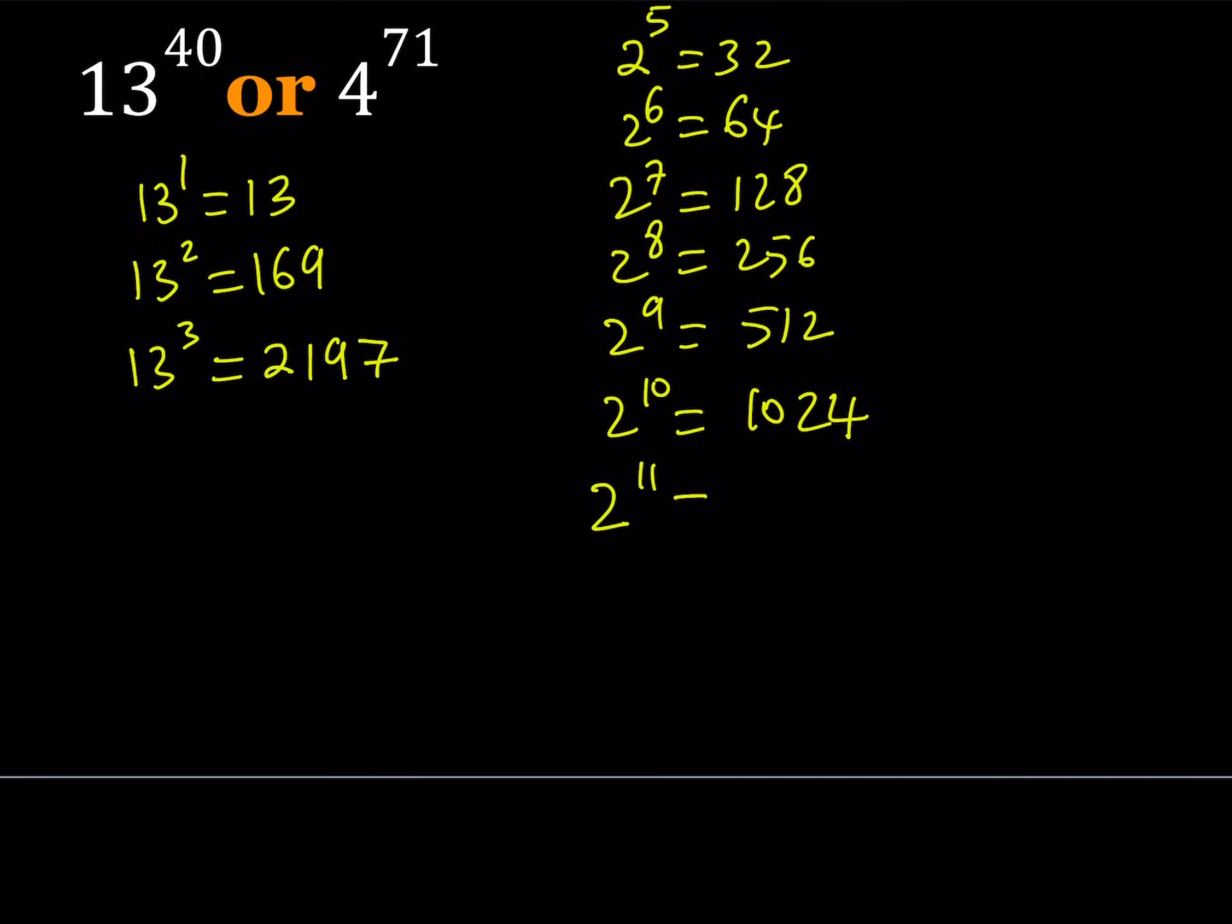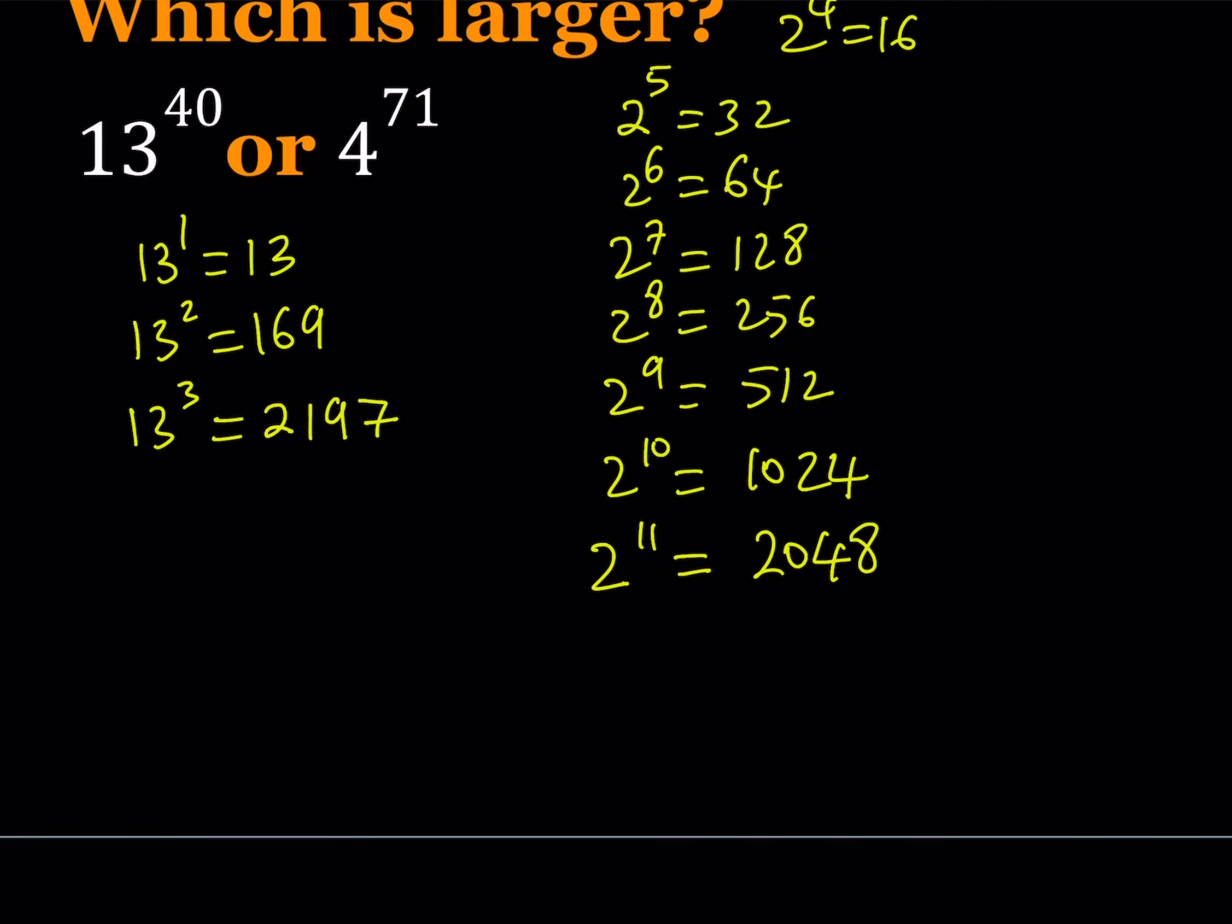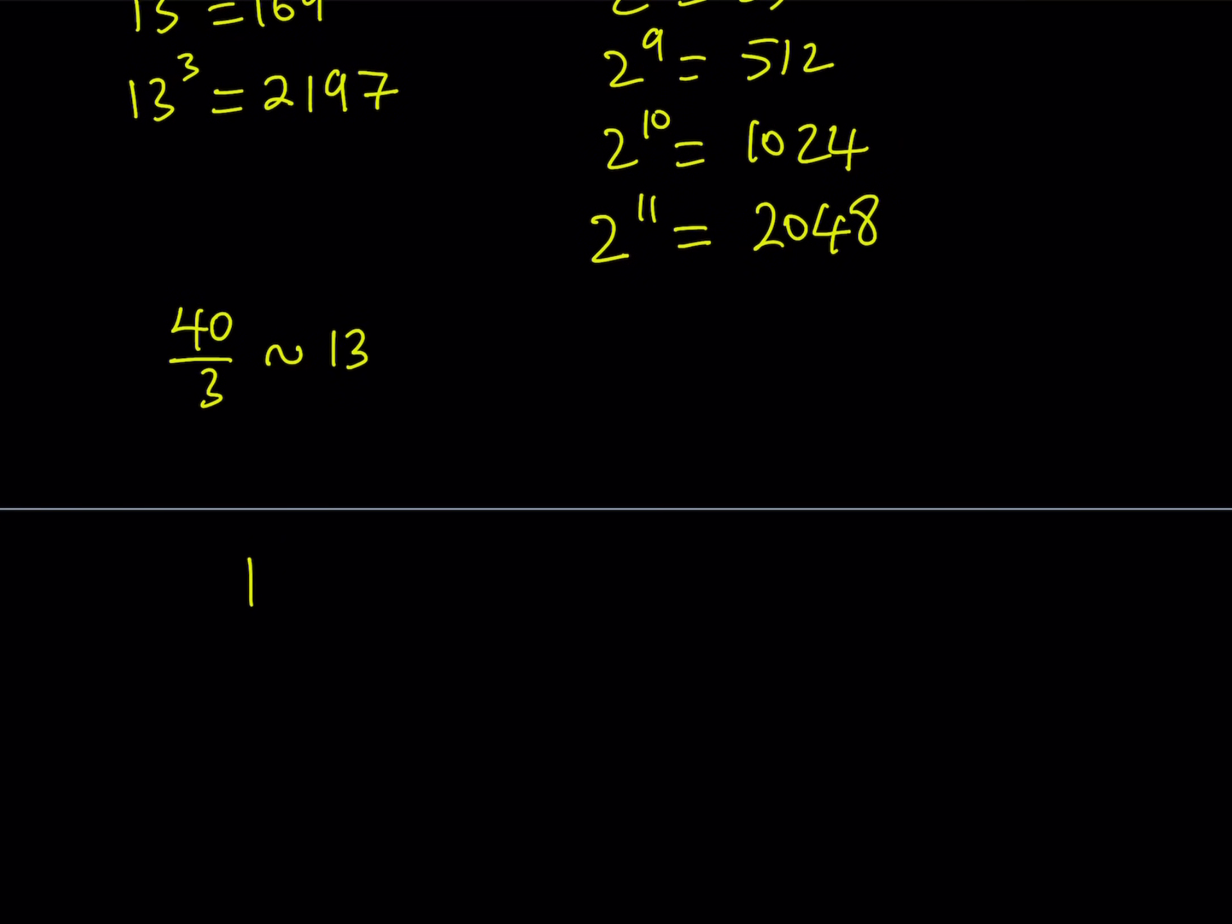And when you double this one more time you get 2048. So 2197 and 2048 are actually not that far apart. They're pretty close. So maybe we can use those. But how do we use those? So I need 13 to the power 40. If you divide 40 by 3, it's going to be about 13. So I would like to take 13 to the 3rd power, which is 2197, and I want to raise it to the power 13 to get close to 13 to the power 40.